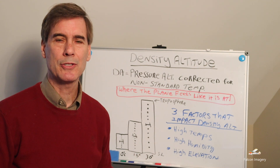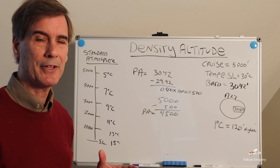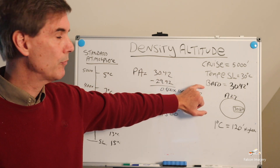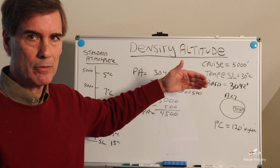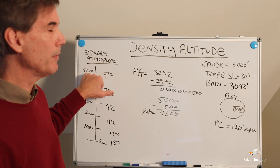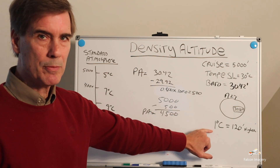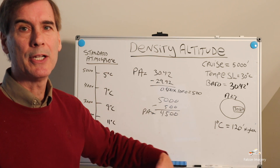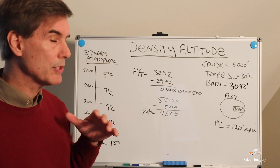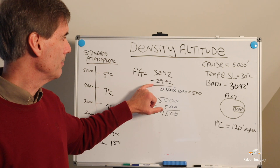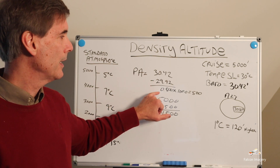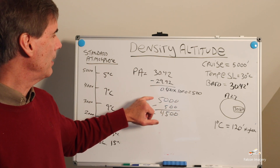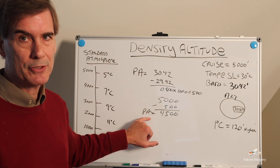Now I'm going to show you how to calculate density altitude using a simple mathematical formula. In this real-life example, we're going to cruise at 5,000 feet. The temperature at sea level is 30 degrees C, and the barometric pressure is 30.42 inches. We'd plug 30.42 inches into our altimeter and cruise at 5,000 feet. To calculate pressure altitude: take 30.42 inches, subtract 29.92 inches (standard atmosphere), which gives 0.5; multiply by 1,000 to get 500 feet. We subtract that 500 feet from our true altitude of 5,000 feet to get a pressure altitude of 4,500 feet.